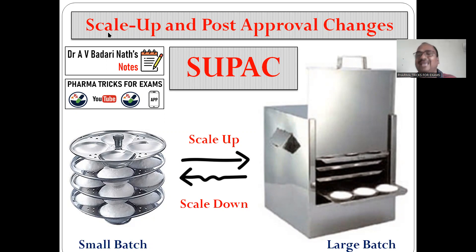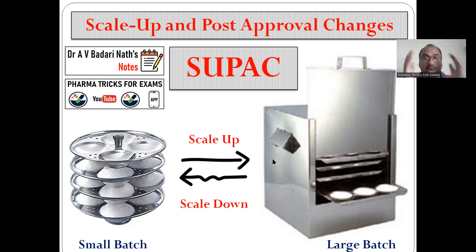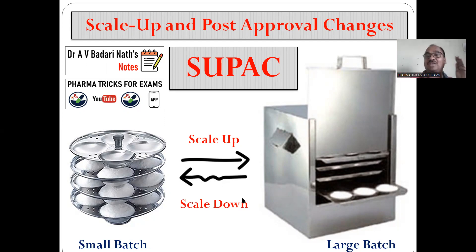First we will see SU. SU means scale up. What is the meaning of scale up? Small batch, you are making into a big batch — that is called scale up. For example, your mother at home is making 20 idlis, but in a hotel they are making 100 idlis at a time. That is called scale up — you are increasing the batch size. You are producing 1 lakh tablets per batch, and now you want to increase to 10 lakh tablets per batch. Scale down also exists — that means decreasing the batch size from large to small.